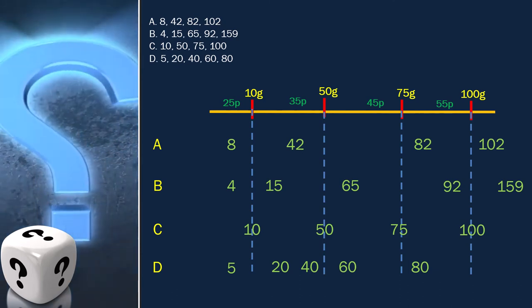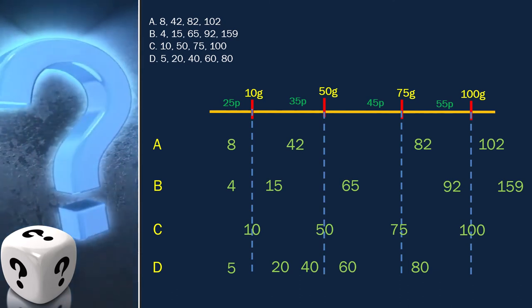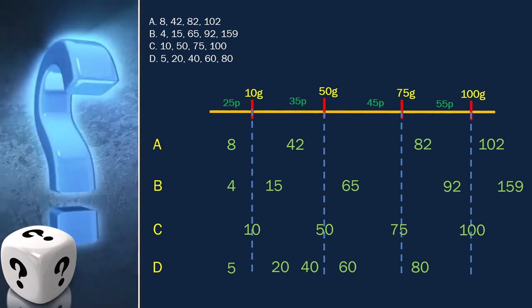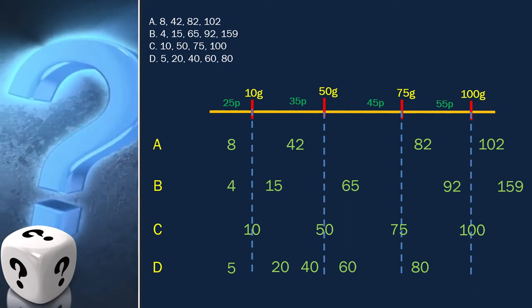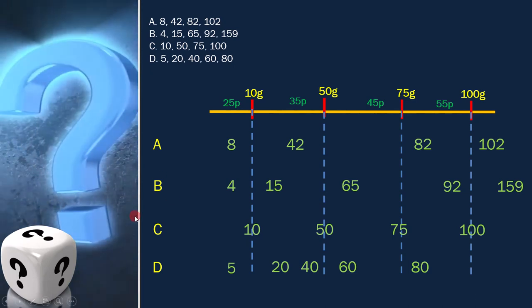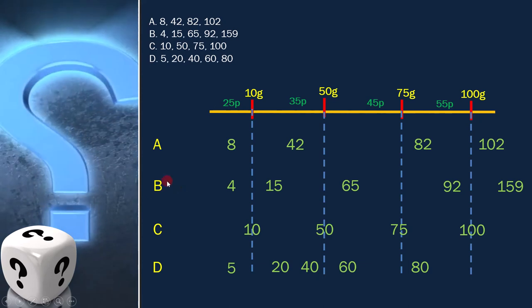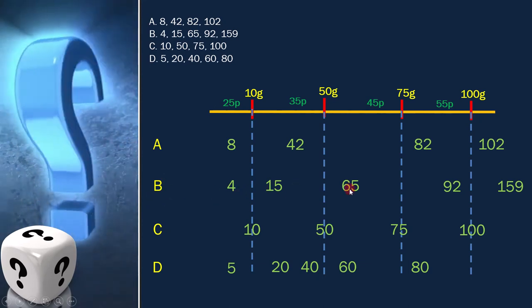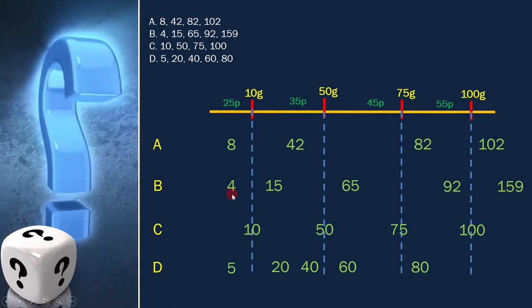As per the question, we have to find which test inputs in grams would be selected using equivalence partitioning. You may get confused between option B and C. But here, option B is the correct answer, because it covers all the equivalence classes. Option B is the answer.